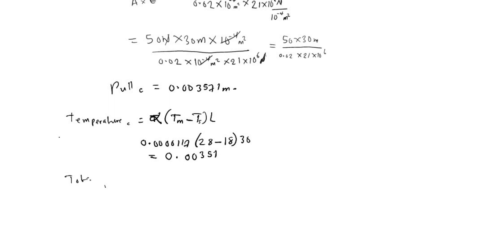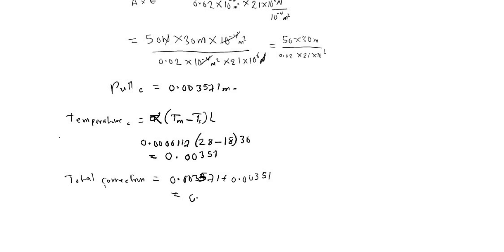The total correction is the sum of the pull correction and the temperature correction: 0.003571 + 0.00351 = 0.007081 meters.